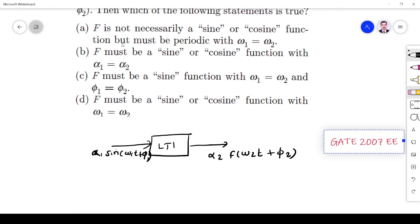They're asking about the value of F. When you apply α₁sin(ω₁t + φ₁) - when you apply any sinusoidal signal as input to an LTI system, the output may have the same or different amplitude. It should be either sine or cosine, but one thing is sure: the frequency should be the same. The phase may be different.